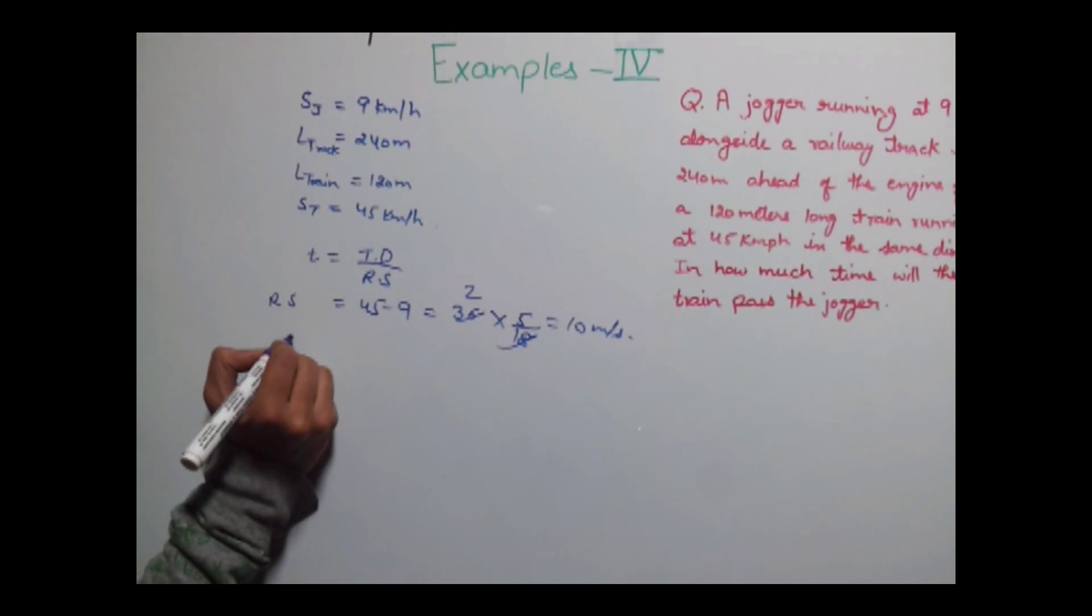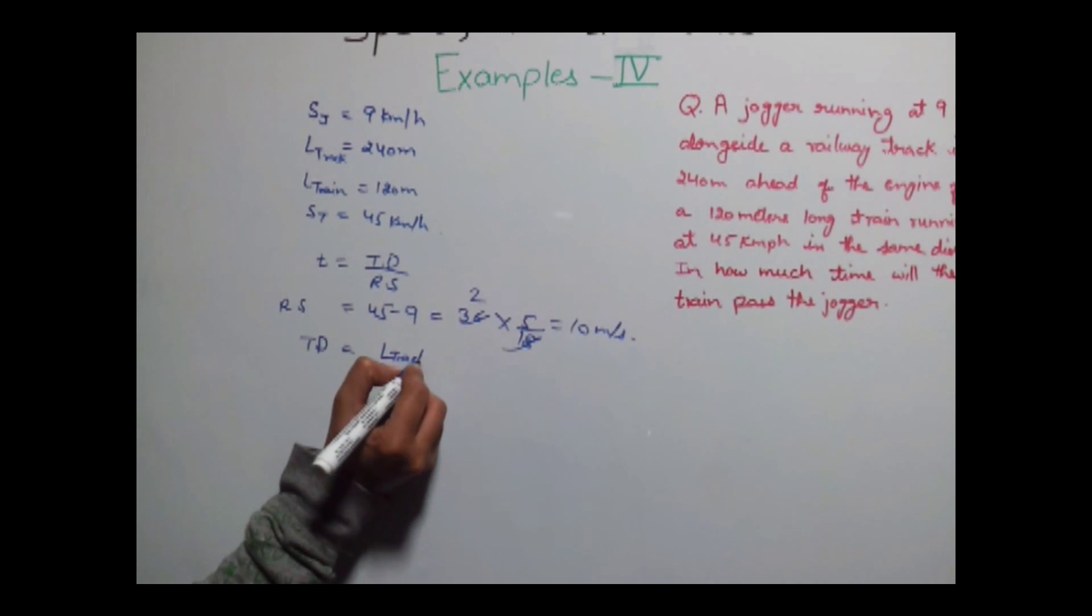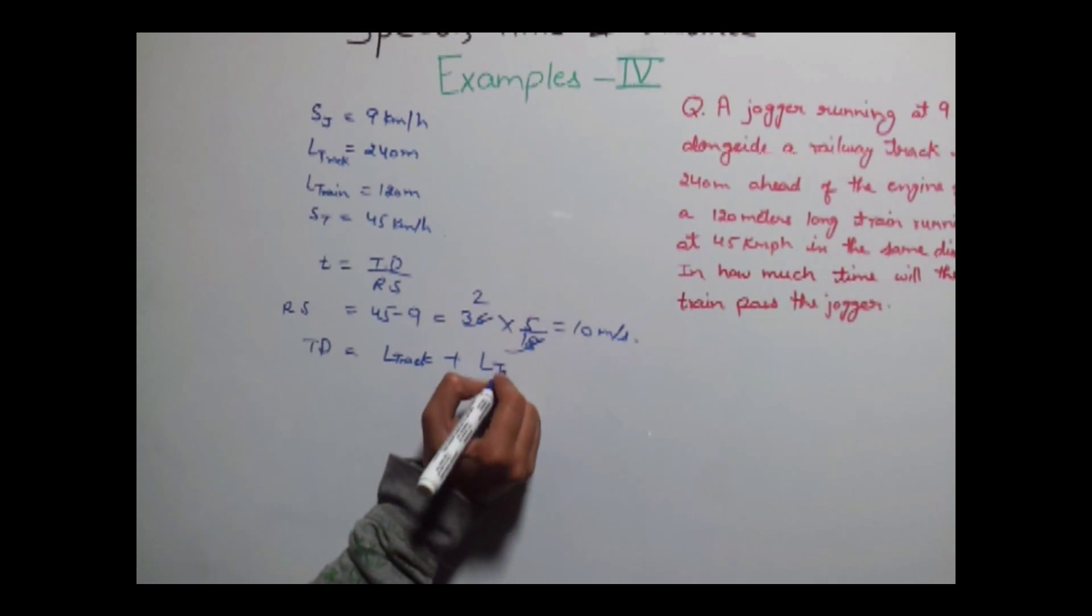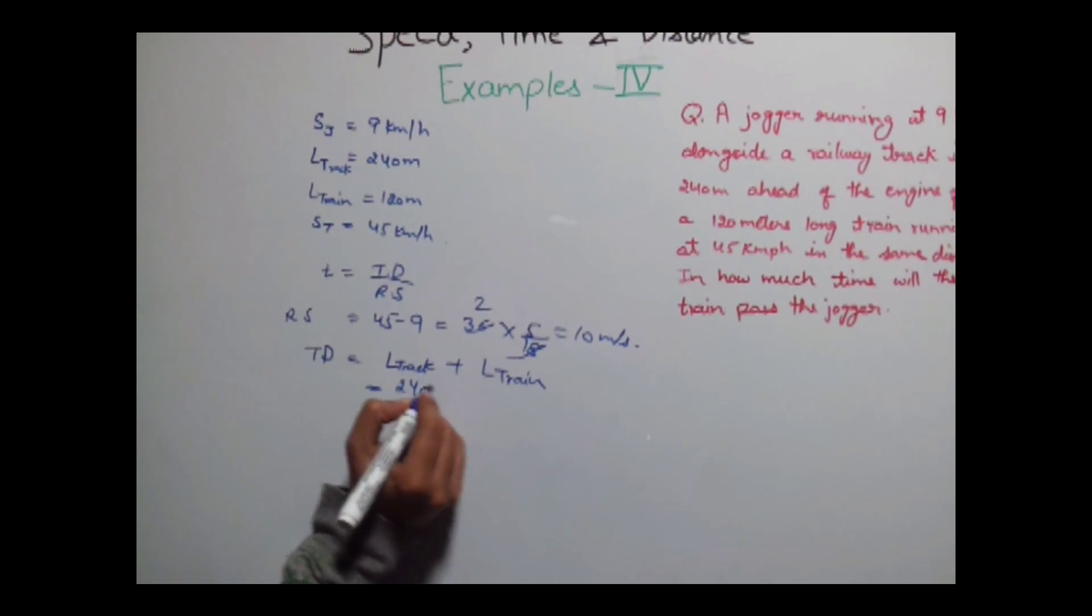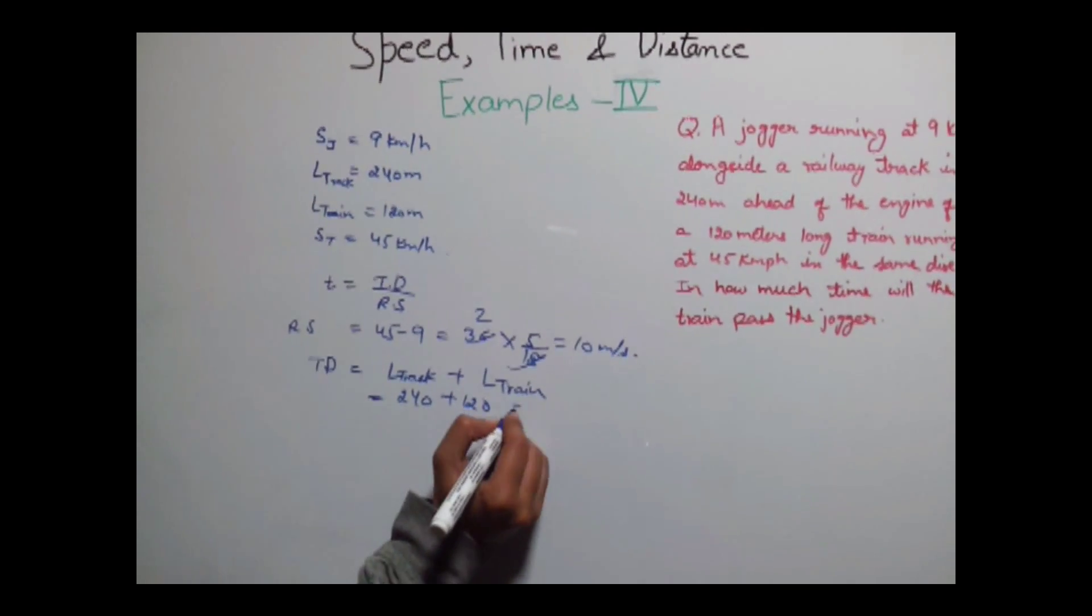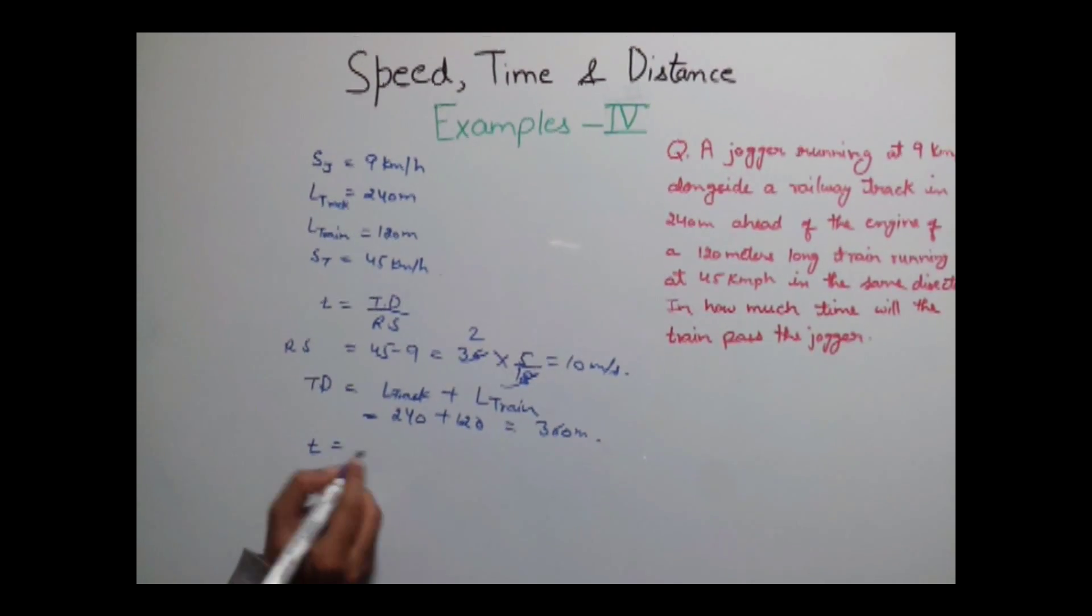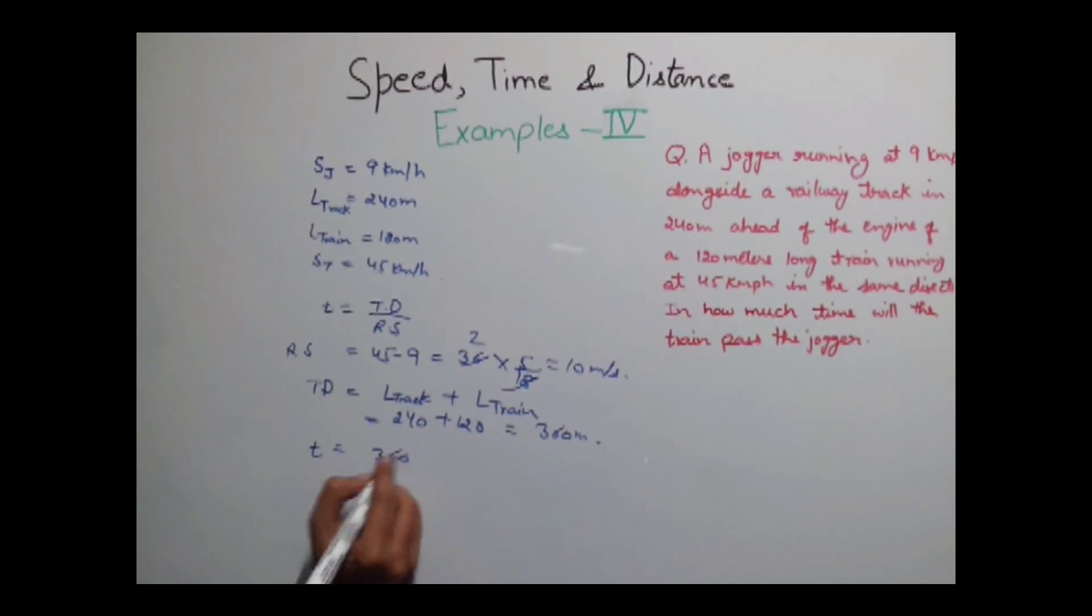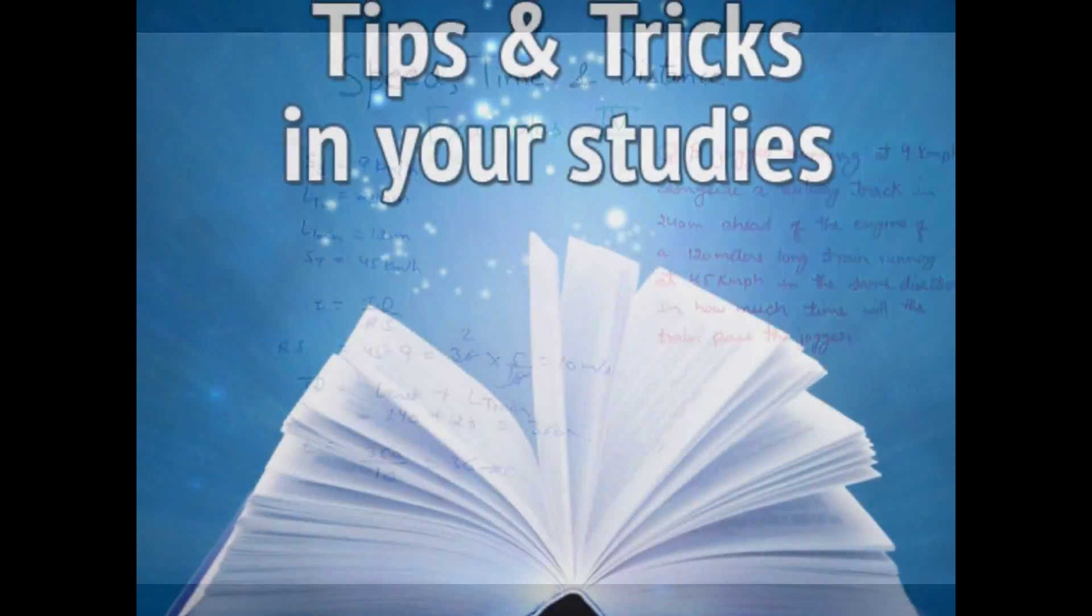Total distance would be equal to length of track plus length of train which is equal to 240 plus 120 which gives us 360 meters. So time will be equal to 360 divided by 10 that is 36 seconds.